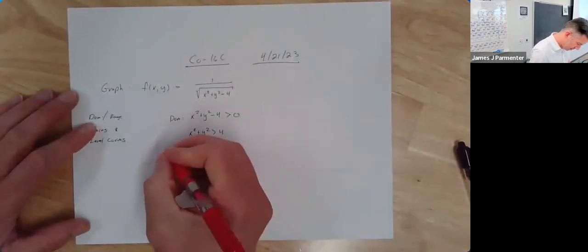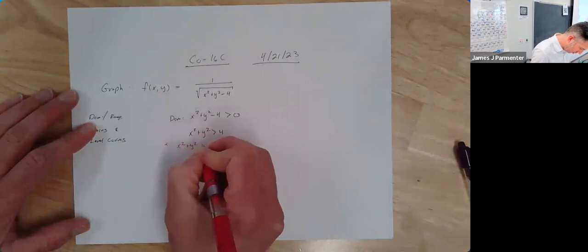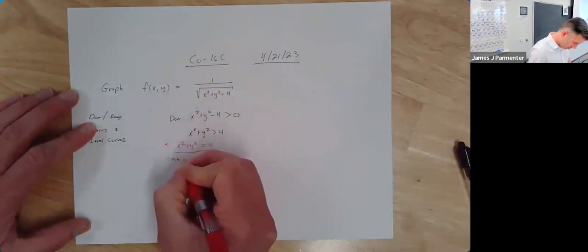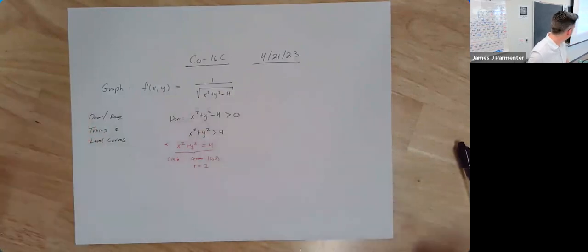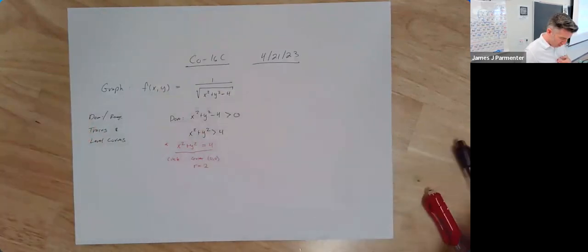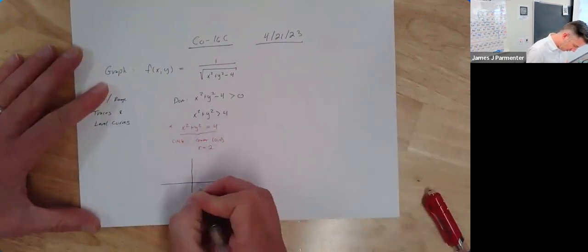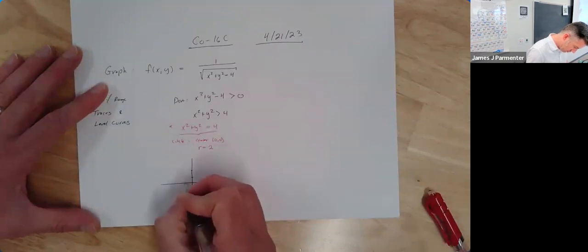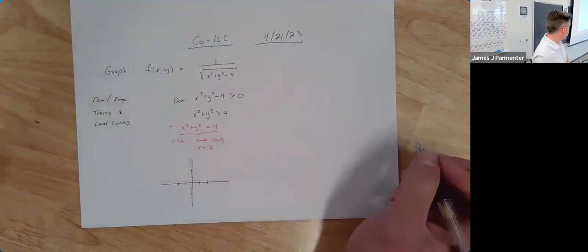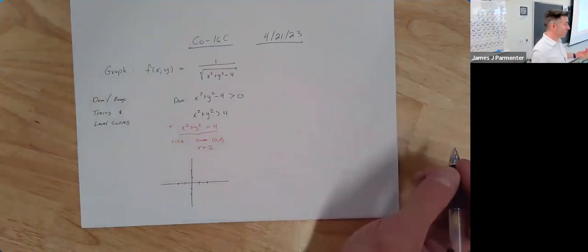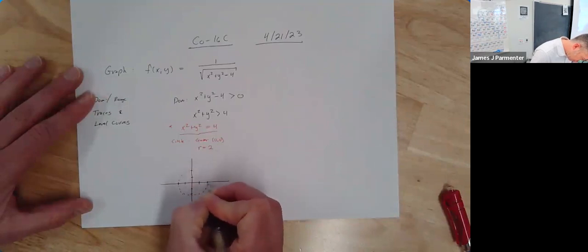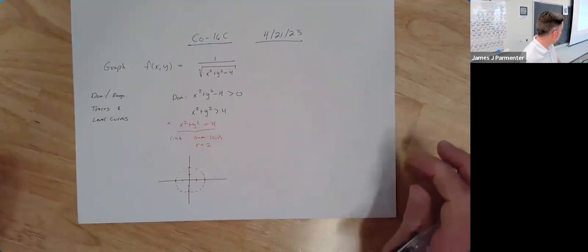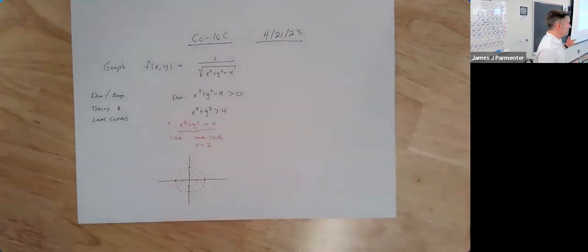We know that x squared plus y squared equal to 4 is a circle centered at the origin with radius 2. So if I want x squared plus y squared to be greater than 4, I'm going to draw that circle of radius 2 as a dashed circle to indicate that I'm not including it.